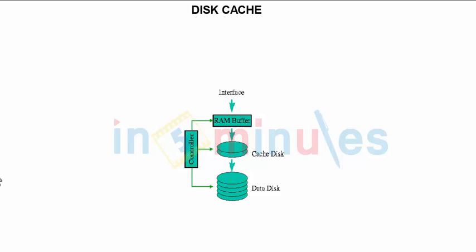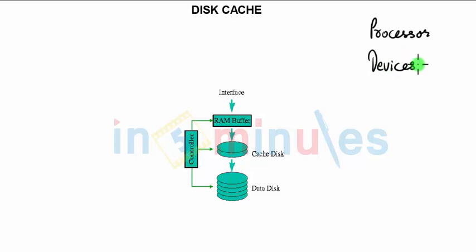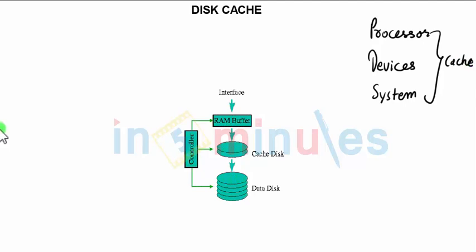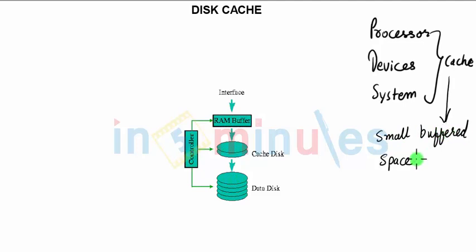When it comes to the cache mechanism, things like processors, devices that include printers, routers, etc., and even the entire system — all these devices have something called cache. So what do we mean by a cache? Cache can be understood as a small buffered space.